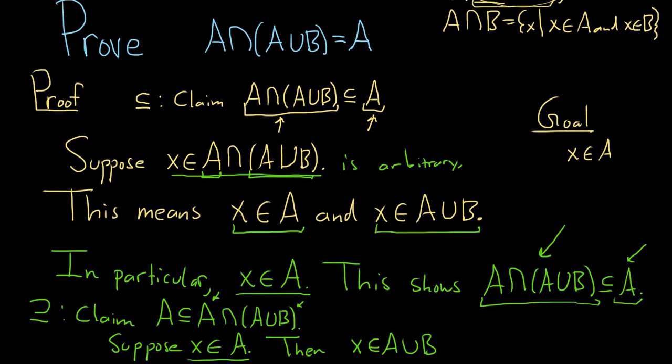That's what it means for, remember, X is in A union B. This means that X is in A, or X is in B. So this condition is satisfied as long as one of these is true. Well, this one is true, X is in A, so it's certainly in A or B.